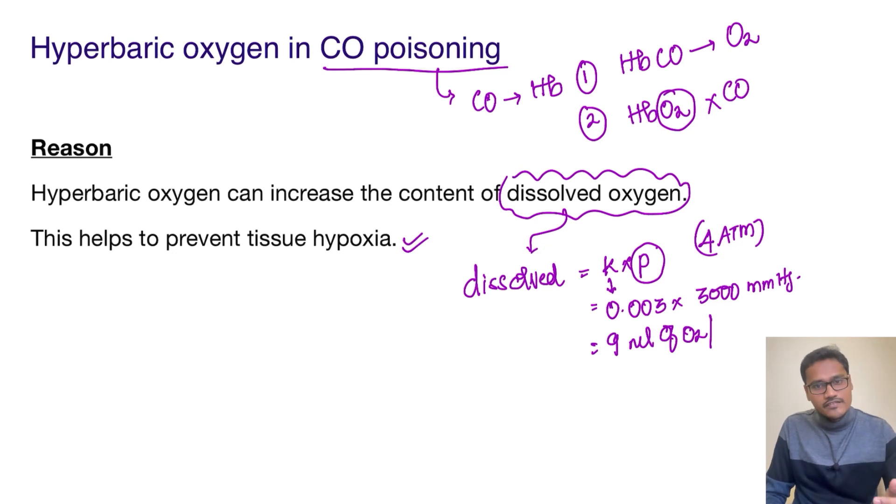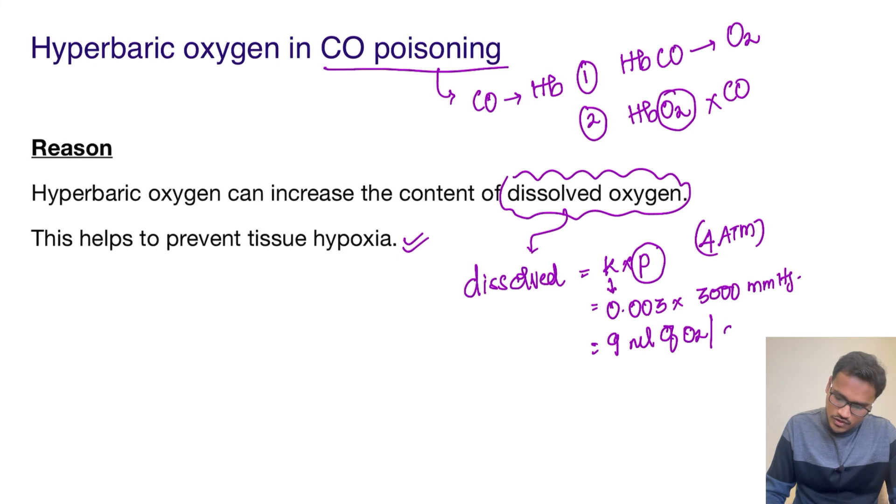This is a very high amount of dissolved form which is not very safe to the human, but to save the person we have to use hyperbaric oxygen at least for some time. So this amount of oxygen will be dissolved in the 100 ml and the tissue will be prevented from hypoxia. In this way, hyperbaric oxygen is going to save the person from CO poisoning.